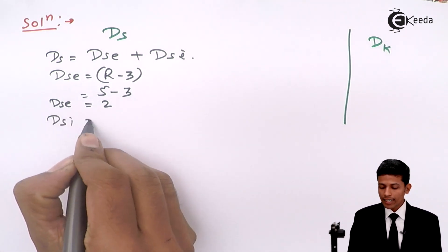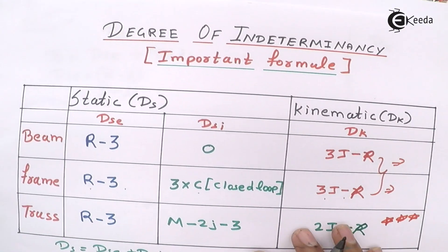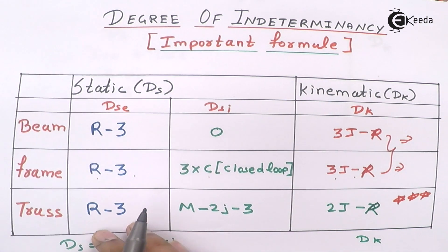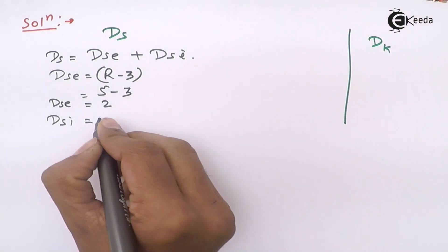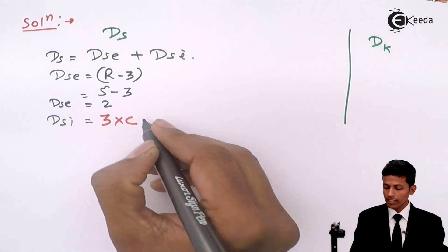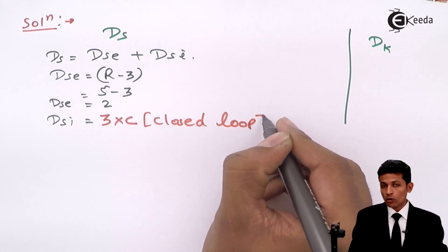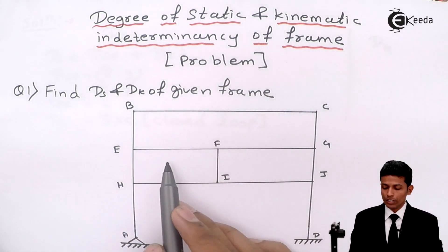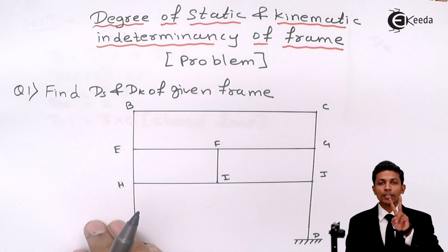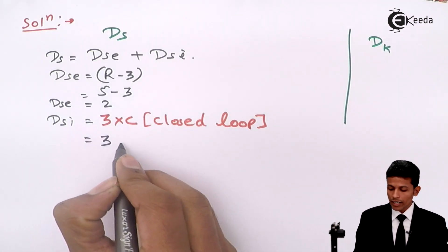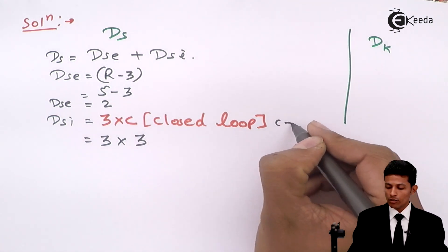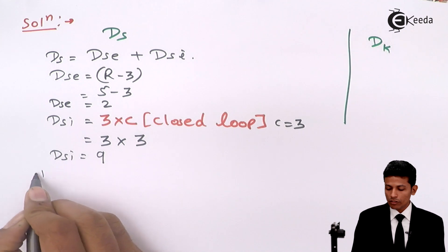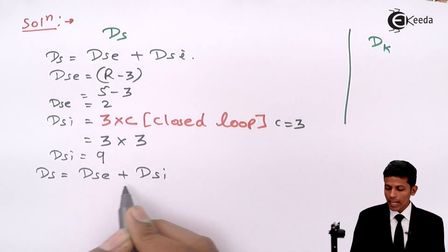Now for DSi in frames, the formula is DSi = 3 × c, where c is the number of closed loops. Looking at the diagram: this is one closed loop, this is the second, and this is the third — so c = 3. Therefore DSi = 3 × 3 = 9.